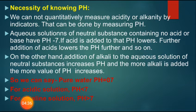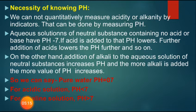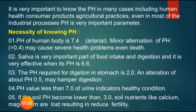Now I am discussing the necessity of knowing pH. We cannot quantitatively measure acidity or alkalinity by indicators alone; that can be done by measuring pH. Aqueous solutions of neutral substances containing no acid or base have pH 7. If acid is added, the pH lowers; further addition lowers it more. Addition of alkali to a neutral solution increases pH. Pure water pH is 7; for acidic solutions pH is less than 7; for alkaline solutions pH is greater than 7.